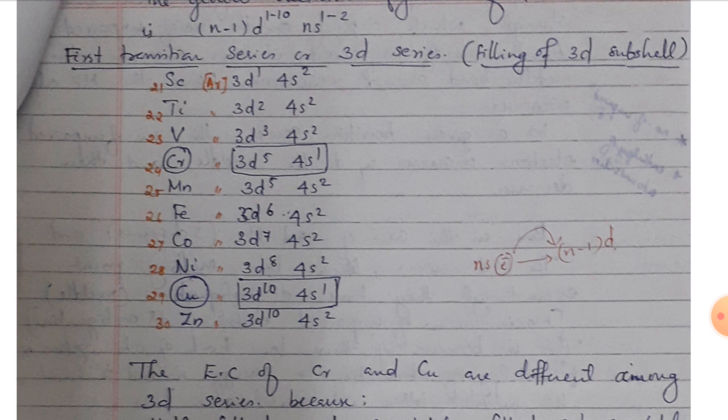Continuing the 3D series: Titanium is [Ar] 3d² 4s², Vanadium is [Ar] 3d³ 4s². Chromium, however, is an exception — we might expect [Ar] 3d⁴ 4s², but its actual configuration is [Ar] 3d⁵ 4s¹, because the half-filled D sub-shell has extra stability. One electron from the 4s orbital jumps to the 3d orbital, giving a stable half-filled 3d⁵ configuration.